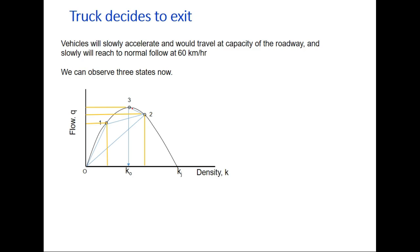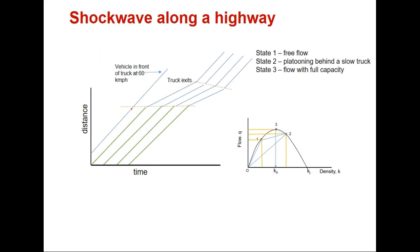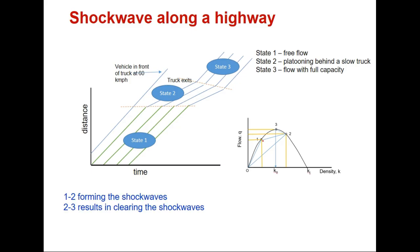At state 3, the flow will be at capacity. State 1 is free flow at 60 km/h; state 2 is platoon movement at 20 km/h; and state 3 after the truck exits is flow at full section capacity. On the flow-density curve, the slope of line 1-2 is the velocity of the shockwave forming the platoon, and the slope of line 2-3 is the velocity of the shockwave clearing the platoon.